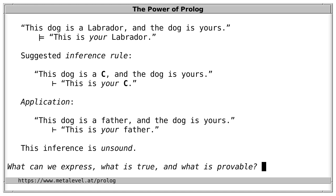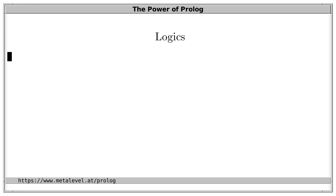This raises several questions: what can we express, which sentences are true, which deductions are sound, and what can we prove? Depending on which syntactic formalisms and which semantics we use, we arrive at different logics. Let's now consider a few such logics.